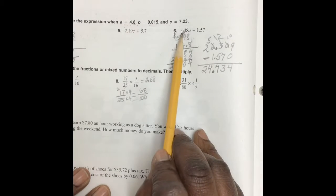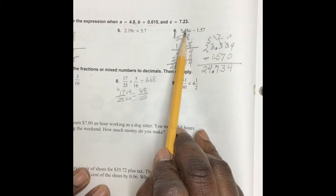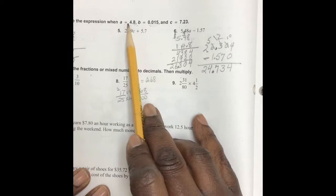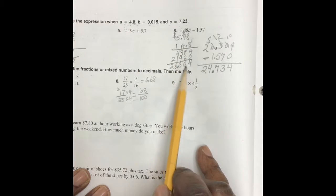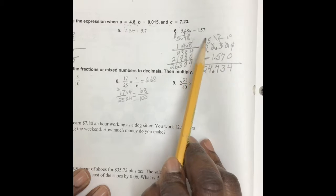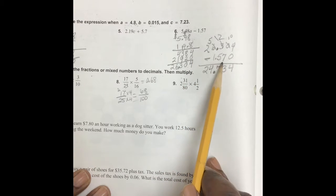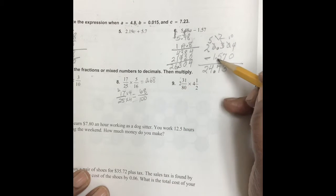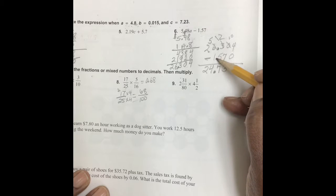Here we discovered that once we multiply 5.48 times a, once we got that answer, then we took that answer and subtracted 1.57.